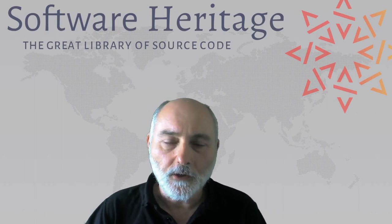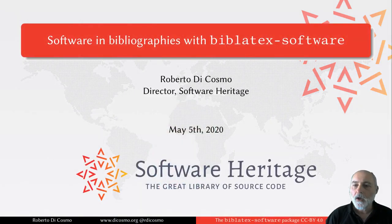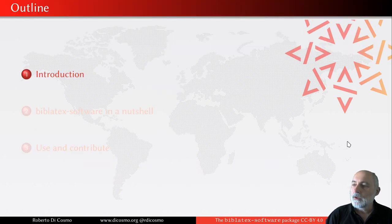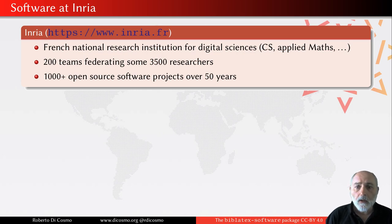Welcome to this tutorial video brought to you from Software Heritage. Today we are going to look together at Biblatex-software, a package designed to support software in bibliographies. A little bit of background: this work has been performed at INRIA, a French national research institution dedicated to digital sciences. In this institution, over the past half century, we have been developing over 1,000 open source software projects, and naturally we need a way to mention these software projects properly.